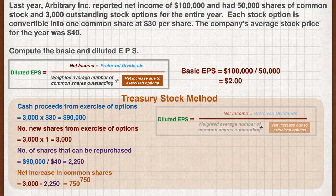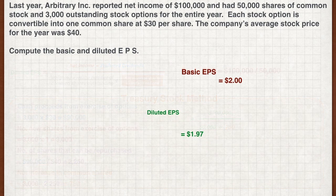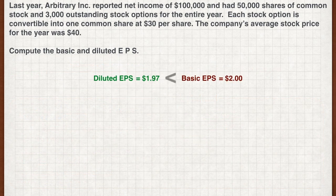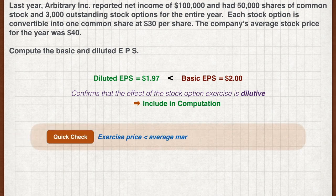Plugging in the figures, we get a diluted EPS of $1.97. Since the diluted EPS is lower than the basic EPS, the stock option is dilutive and should be included in the computation of diluted EPS. Stock options are dilutive only when their exercise price is less than the average market price of the stock over the year.